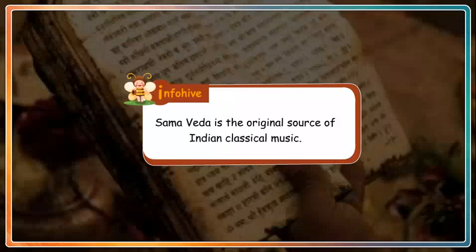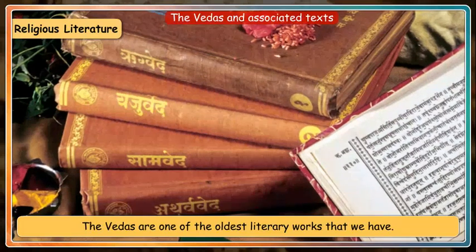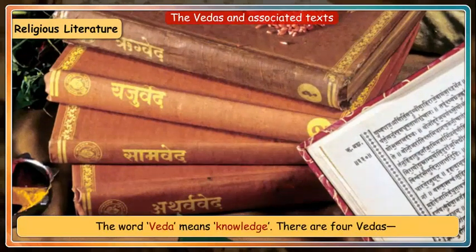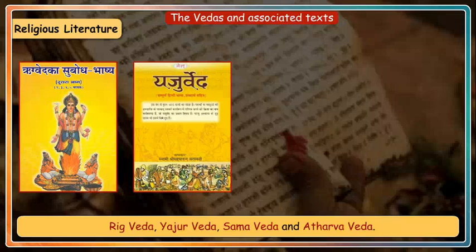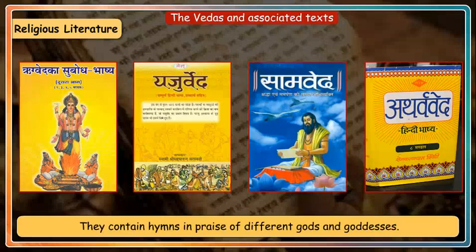Samaveda is the original source of Indian classical music. The Vedas are one of the oldest literary works that we have. The word Veda means knowledge. There are four Vedas: Rig Veda, Yajur Veda, Samaveda and Atharvaveda. They contain hymns in praise of different gods and goddesses.